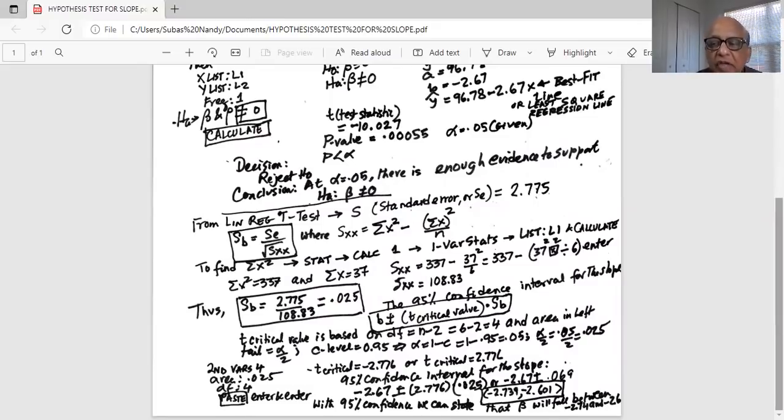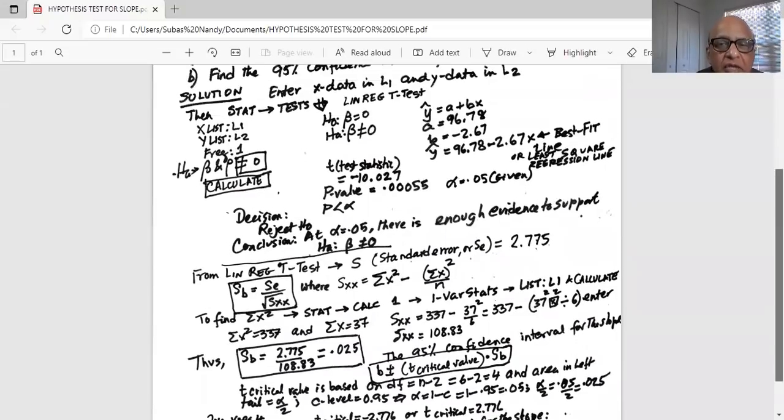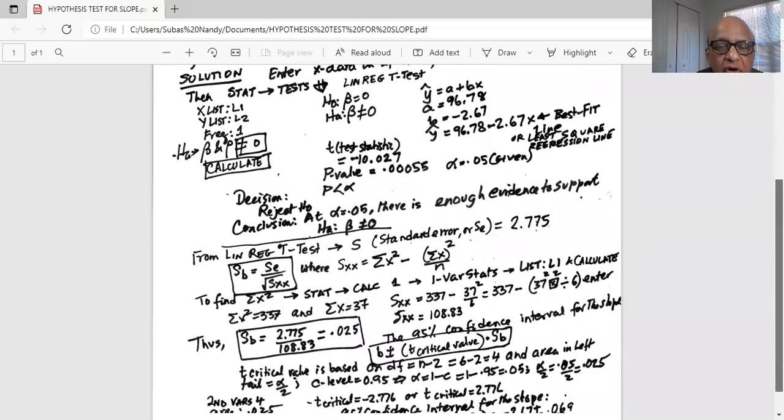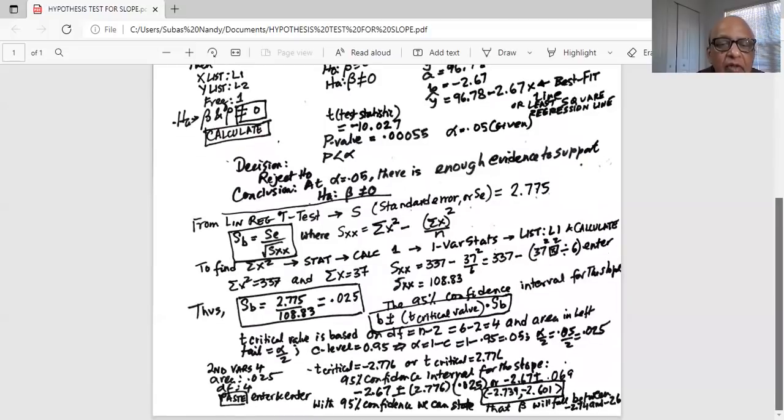The formula for the 95% confidence interval for the slope is given by B, which is the slope we get from the sample regression plus minus T critical value multiplied by SB. We know B from previous step. B is the slope is minus 2.67. So we need, we also know SB, which is 0.025. So we need to find out the T critical value that is based on degrees of freedom. N minus 2 is 6 minus 2 is equal to 4. 6 is your sample size. 6 minus 2 is 4.